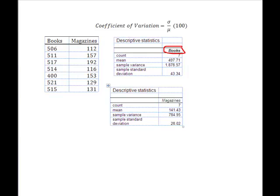So what I've done is I've just used the computer because I've cheated and I've come up with the descriptive statistics for books and for magazines. And you can see for books, I have a mean of 497.71, standard deviation 43.34, a mean of 141, and a standard deviation of 28.2 for magazines. Now, what I can do is I can calculate a coefficient of variation for books and another one for magazines and I'm going to compare them. And I'm going to be able to draw a conclusion as to which data set is the most variable.